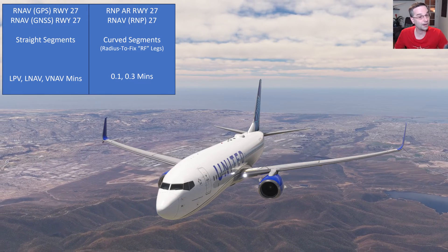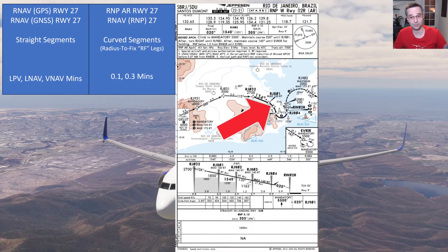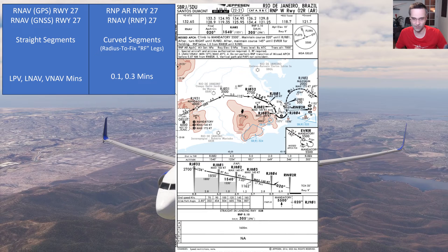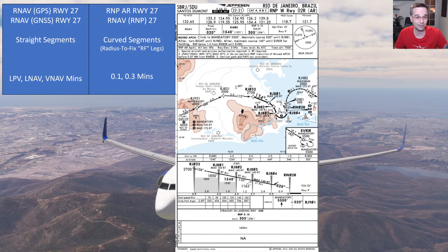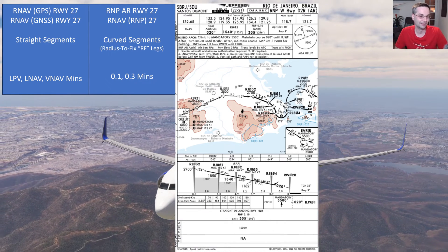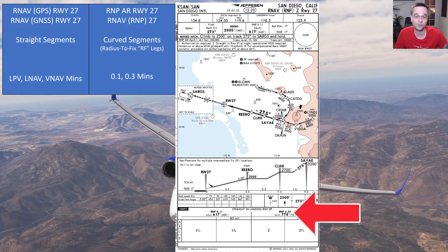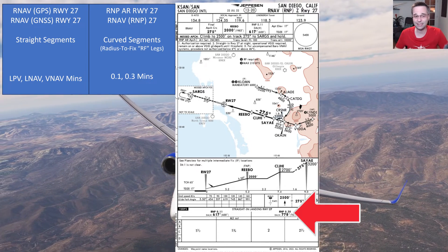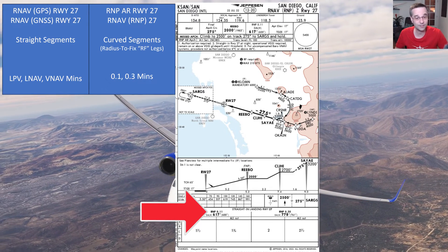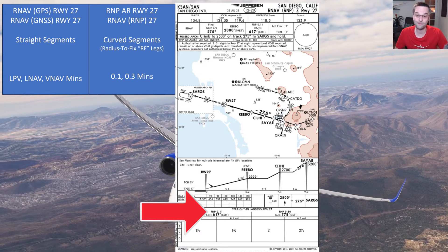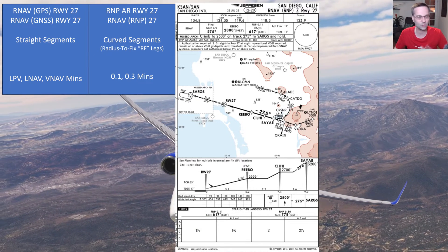The other type of RNAV approach is an RNP or AR approach, and this can actually have curved segments called radius to fixed legs, or just RF for short, which can make for some pretty fun and interesting landings — like this approach into Santos Dumont in Brazil with that last second turn towards final. The RNP or AR approach has two levels of accuracy: the first keeps you within 0.3 miles of the centerline, and you can also fly it down to 0.1 miles from the centerline, which allows for some really precise routes into and out of congested spaces and noise-sensitive areas.